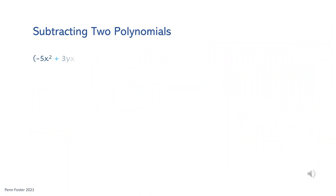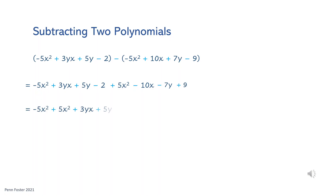Here is another subtraction problem. Write out the first polynomial as is without the parentheses. Now distribute negative 1 over all four terms of the second polynomial: negative 5x squared becomes positive, positive 10x becomes negative, positive 7y becomes negative, and negative 9 becomes positive 9. Rearrange the individual monomials. Negative 5x squared plus its opposite is 0. Bring down 3xy. Combine the y variables — it's negative 2y. Bring down negative 10x as is. Add negative 2 plus 9 — it's 7.